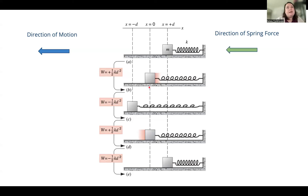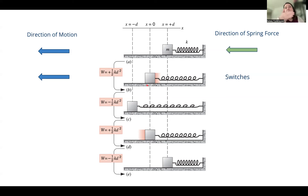This work results in an increase in the kinetic energy of the block, because it goes from not moving to moving with a certain velocity. At the origin, the direction of the spring force switches, because that is the point where the spring wants to be at its natural length. But the block has velocity, so it keeps going. When the spring is compressed, it pushes forward; when it's stretched, it pulls back.